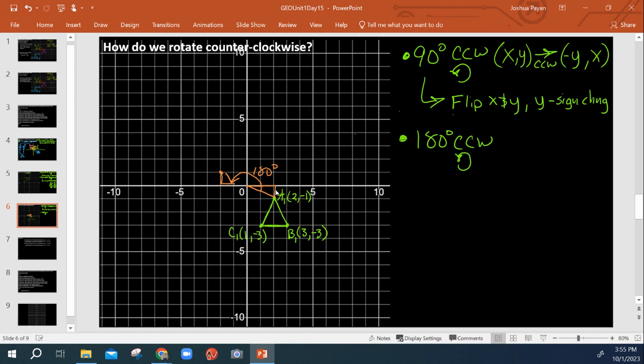Okay, so that would be 180 degree rotation. That would become A2. And then, of course, we would have C2 would be here on the right now. B2 would be here on the left.